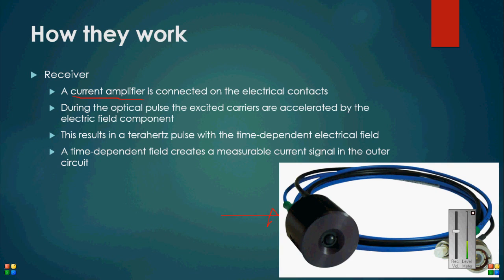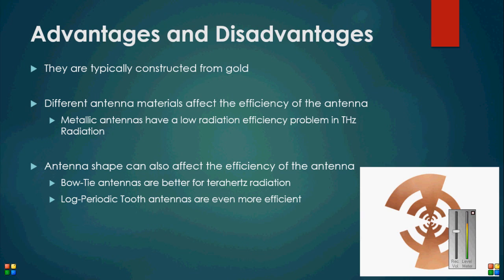The wiring is then used to communicate this signal to a computer, which can then translate this unique current into a message allowing for communication. The quality of radiation depends largely on the material and the shape of the antenna. For example, metallic antennas have a low radiation efficiency in terahertz radiation, which is often problematic for terahertz signals. This image here shows a log-periodic tooth antenna, which is often very effective in transmitting terahertz signals.